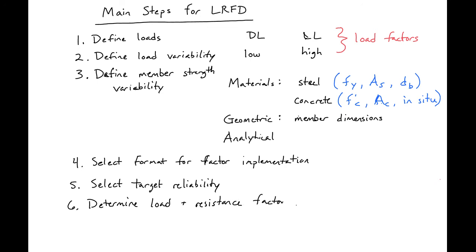These last three steps are done differently depending on the code. In ACI, what we'll generally do is amplify our loads and reduce our resistance. On the load side, we apply load factors to our dead load and live load. On the resistance side, we apply a phi factor — for example, for a tension-controlled member, phi would reduce our strength by 10%.